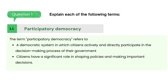Question 1. Explain each of the following terms. Participatory democracy: the term participatory democracy refers to a democratic system in which citizens actively and directly participate in the decision-making process of their government, and have a significant role in shaping policies and making important decisions.